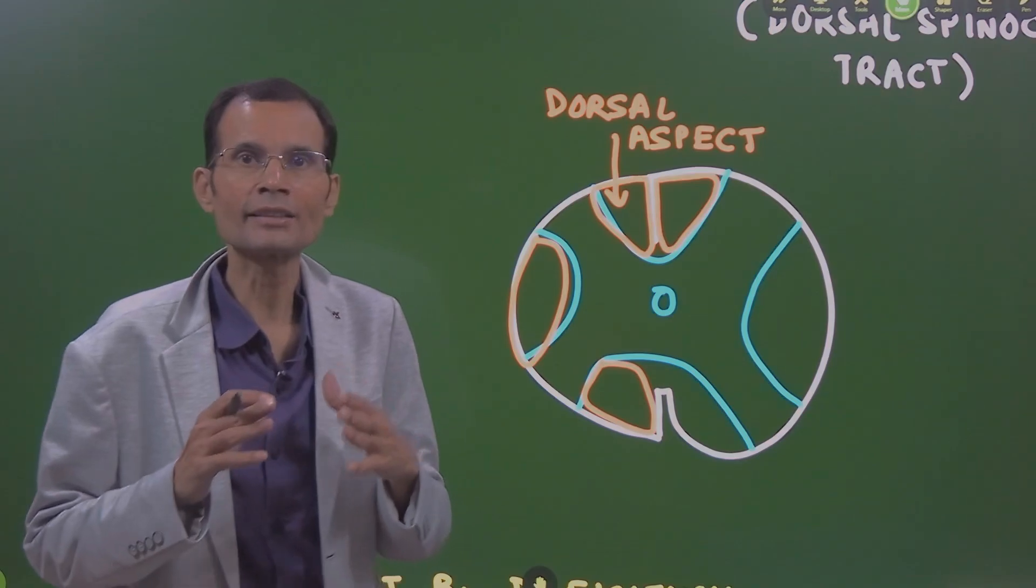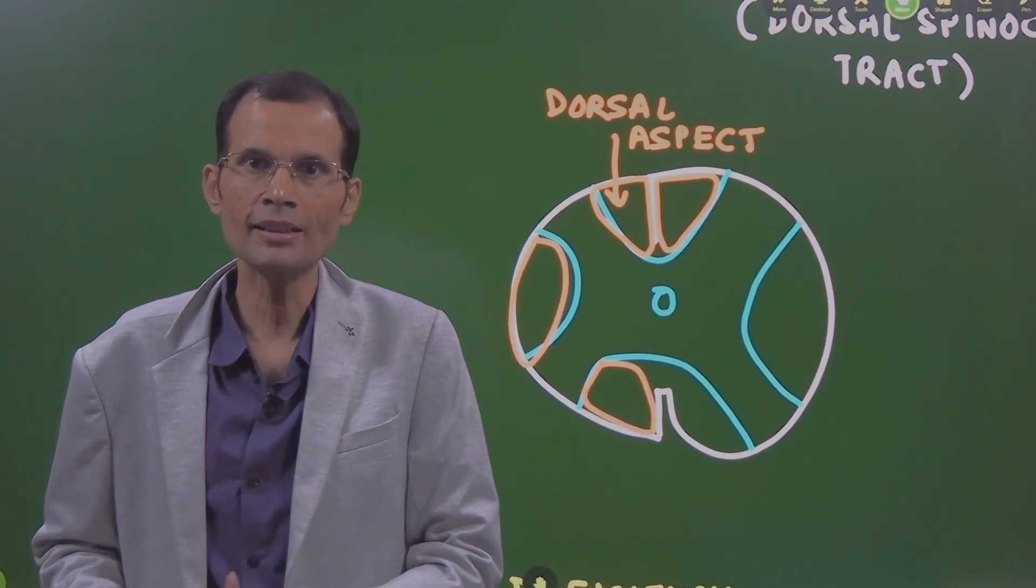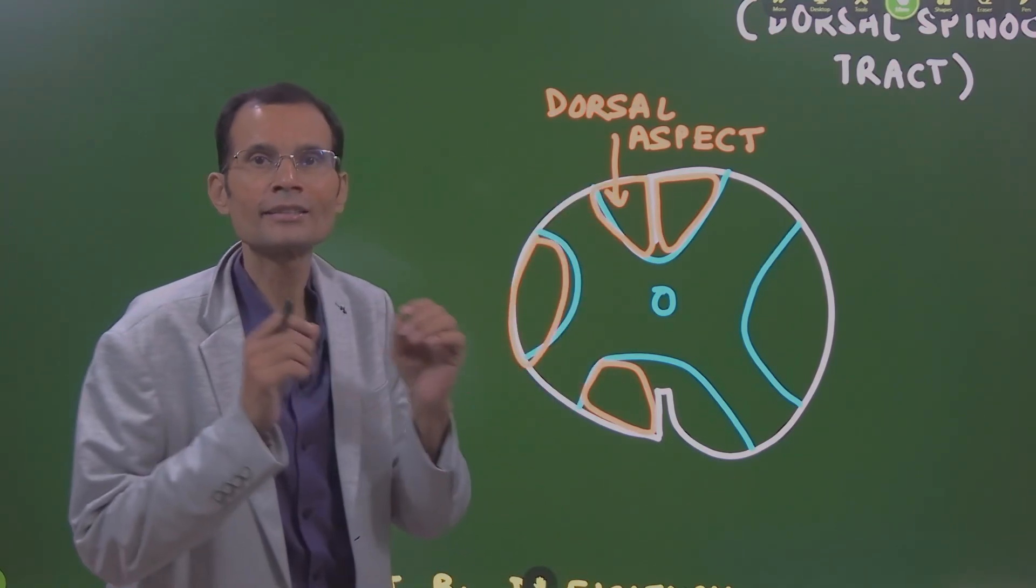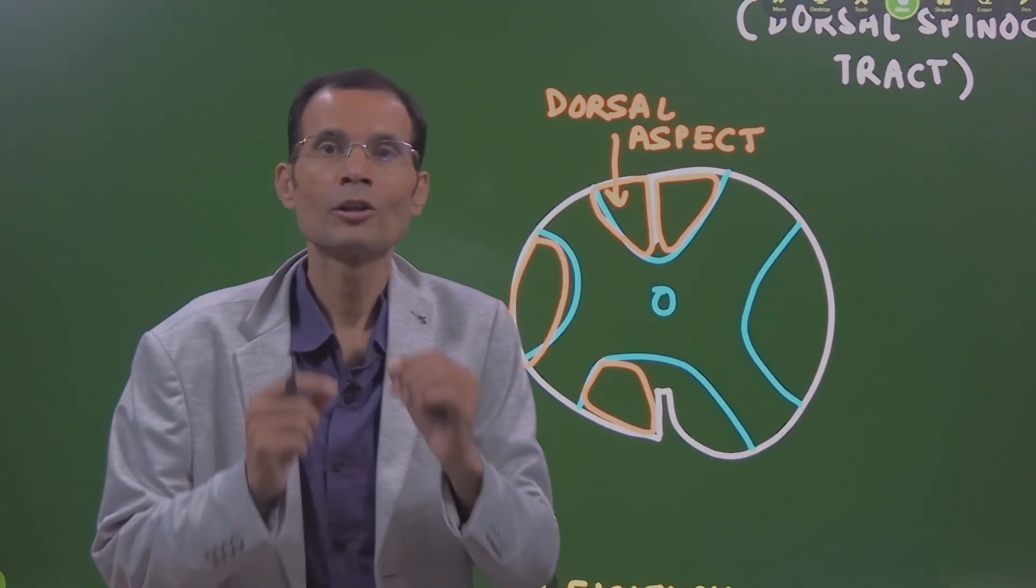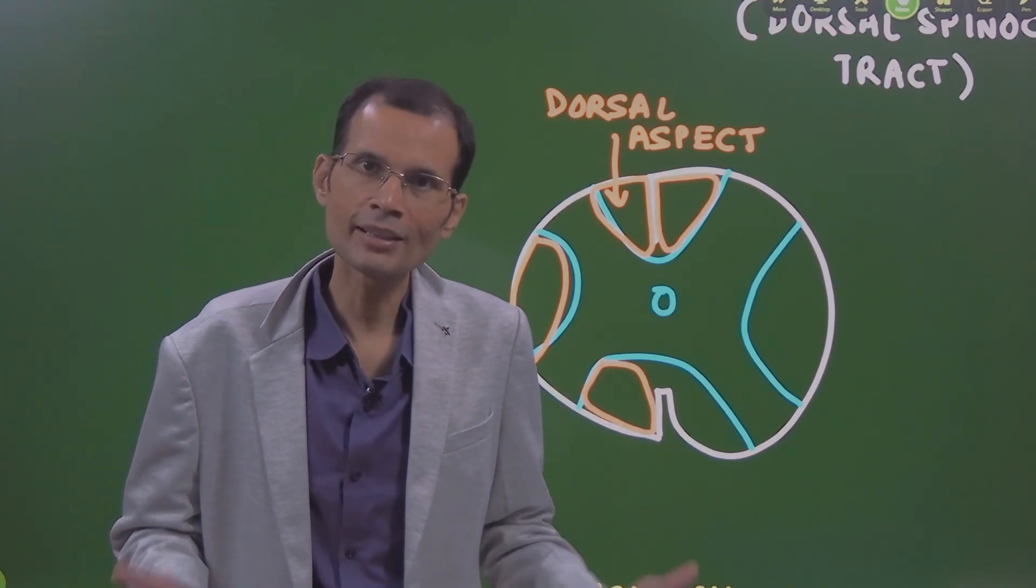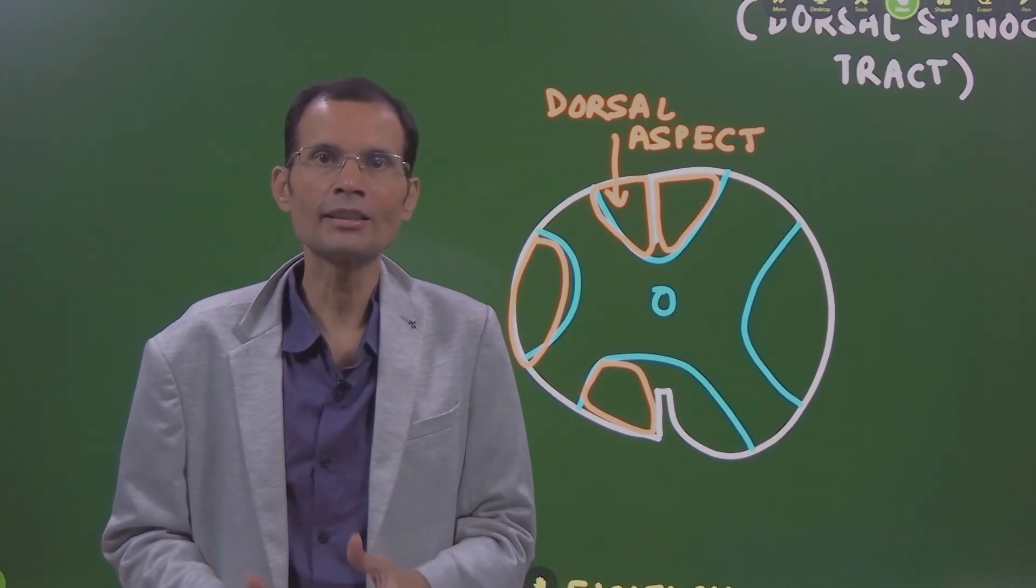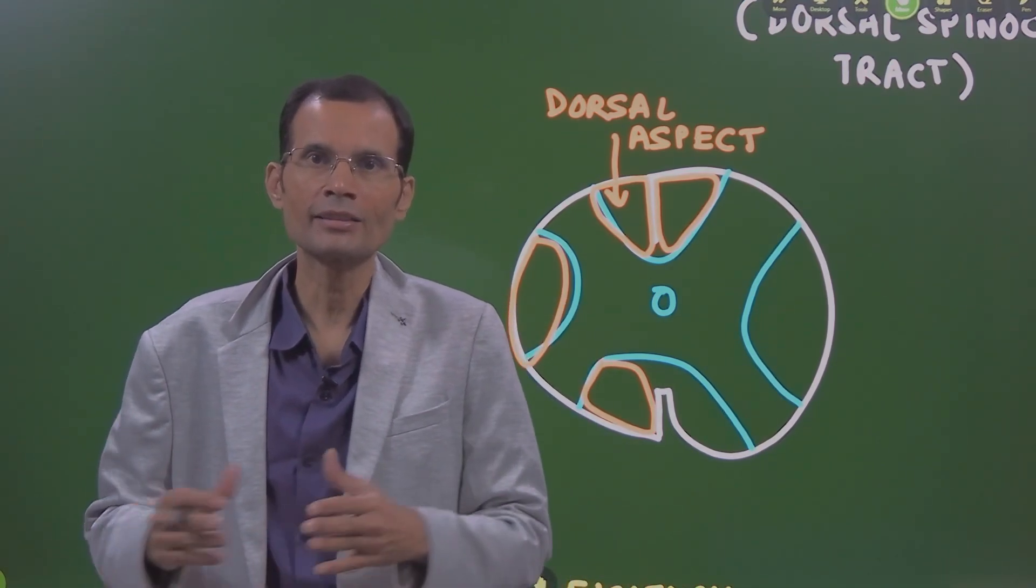This will result in the ataxia and it is called as sensory ataxia simply because it was the loss of sensory information, loss of proprioceptive information, which is sensory information. And this is the reason why in B12 deficiency, there is a sensory ataxia.